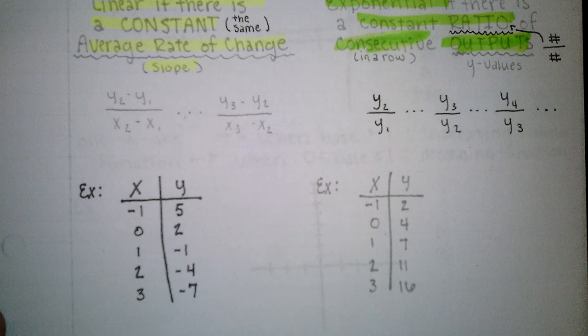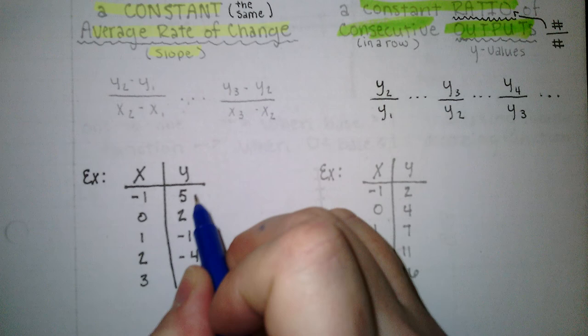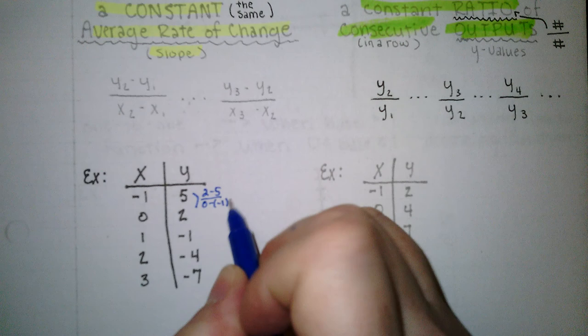So let's check this first one. We're going to be finding the slope between each consecutive ordered pair. So we'll do between these two: 2 minus 5 over 0 minus negative 1, which is negative 3 over 1. So negative 3.